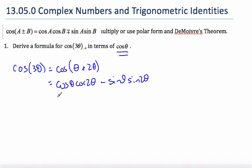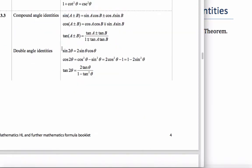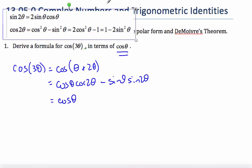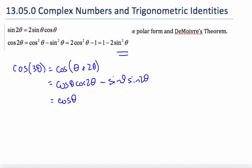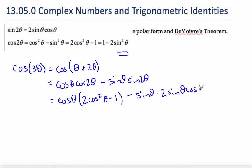My objective is to put everything in terms of cosines. So this is cos theta cos 2 theta. Using my identities from my formula booklet, I can see that cos 2 theta — since I want everything in terms of cosine — is 2 cos squared theta minus 1, minus sine theta times sine 2 theta, which is 2 sine theta cos theta.